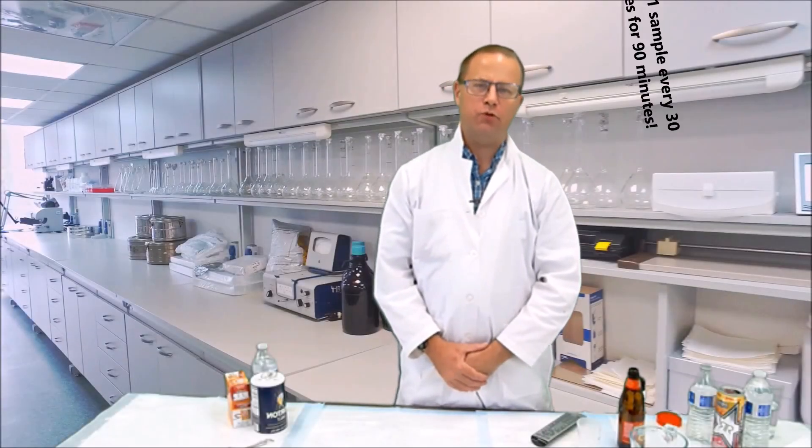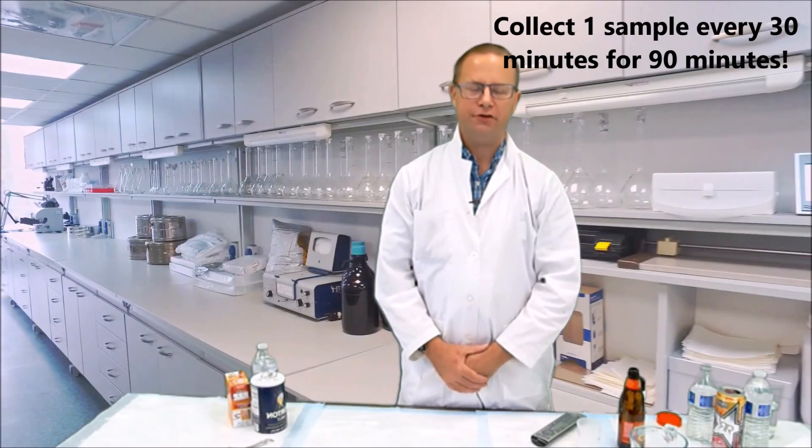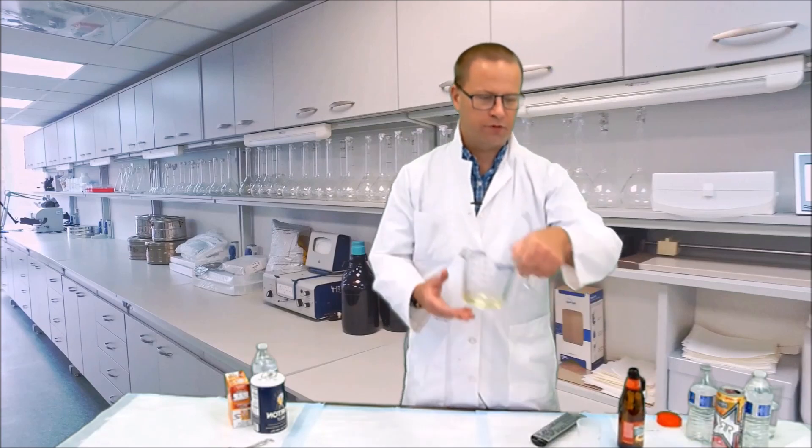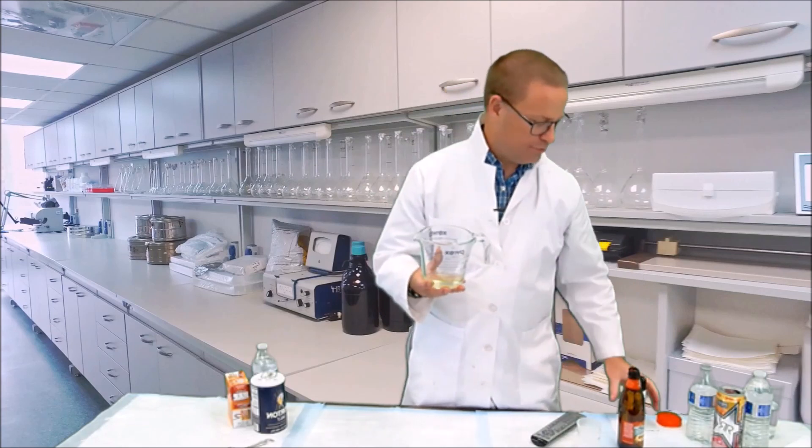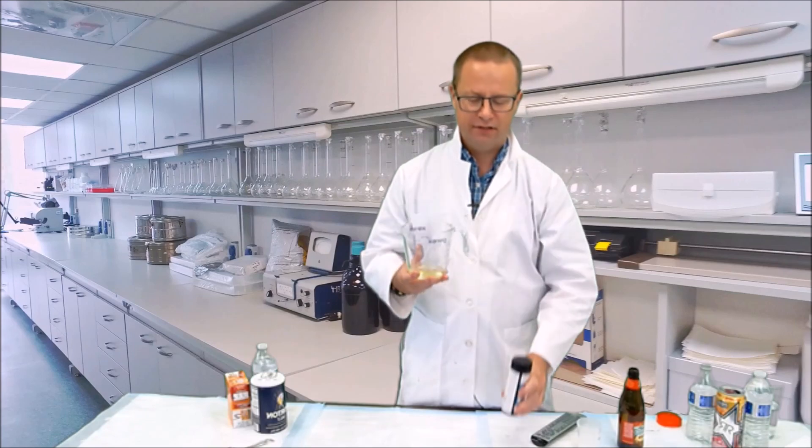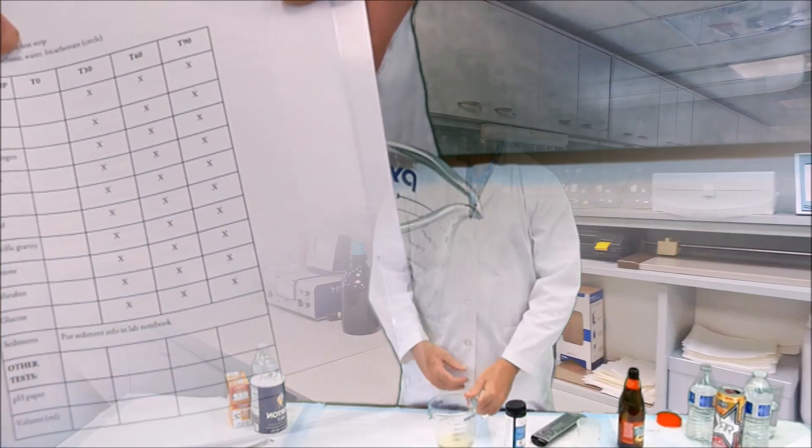After collecting your second sample, you want to wait 30 more minutes before collecting your third sample. So this should be taken about an hour after you started the exercise. Again, you're going to record your urine volume. Use your urinalysis test strips to determine the chemistry, specific gravity, and pH. And then you're going to set a timer for another 30 minutes.